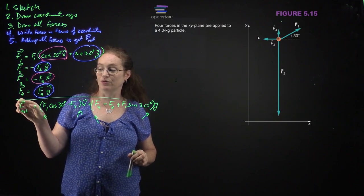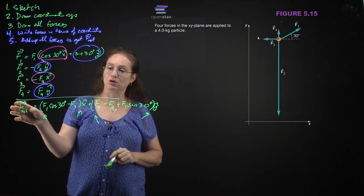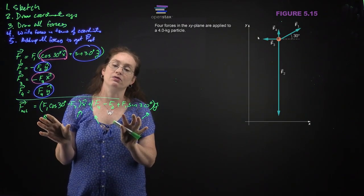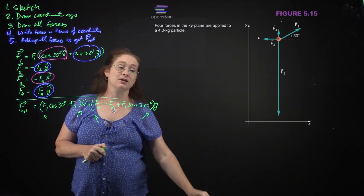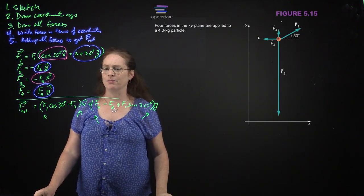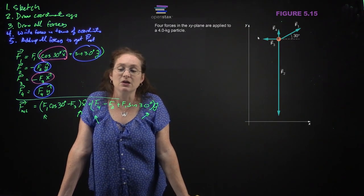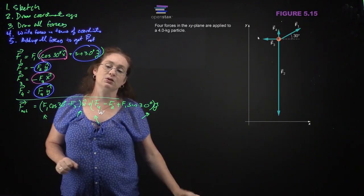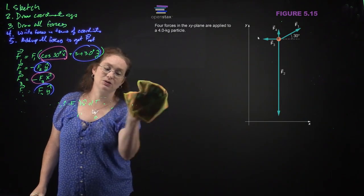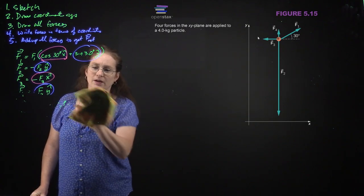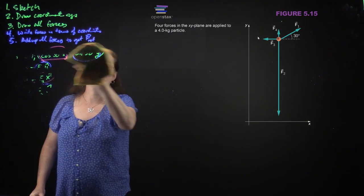Common mistakes include forgetting the vector. Always make sure when you check your work that if you have a vector on one side, you have a vector on the other side. Watch your parentheses. Make sure a vector equals a vector, a scalar equals a scalar — do not set a vector equal to a scalar. If an equation says a vector equals a scalar, it must be wrong.